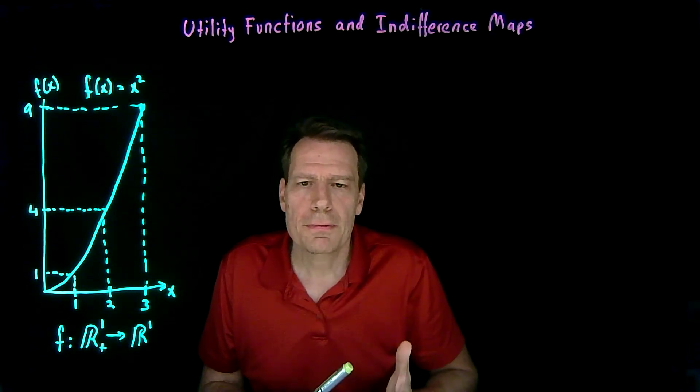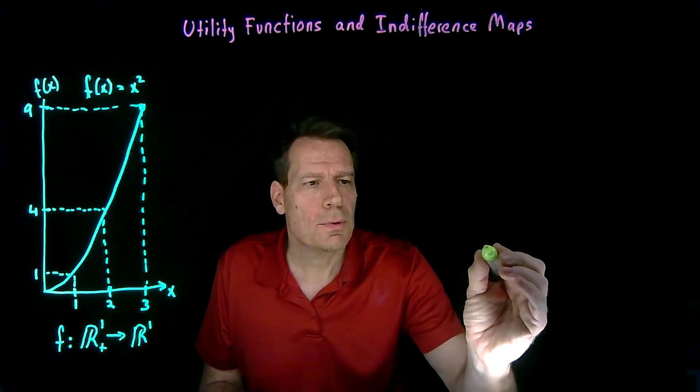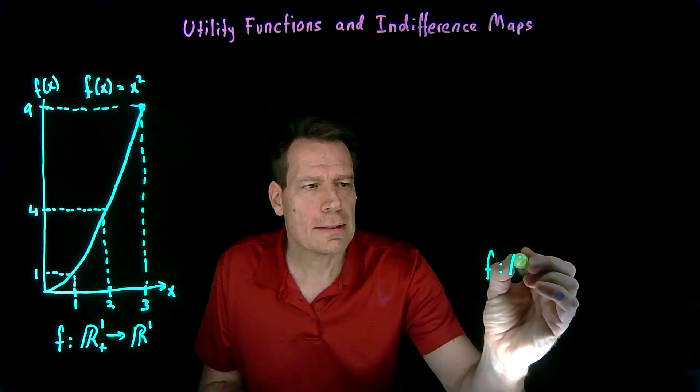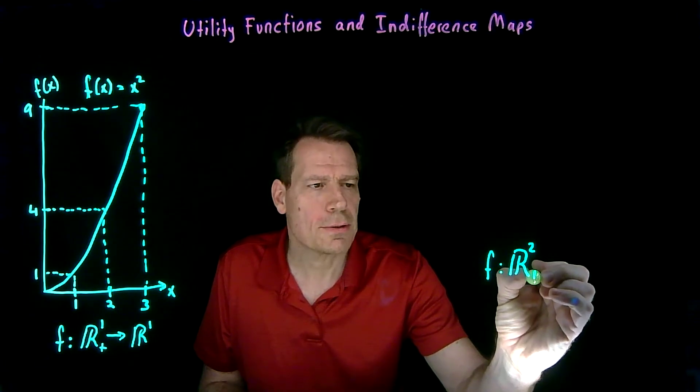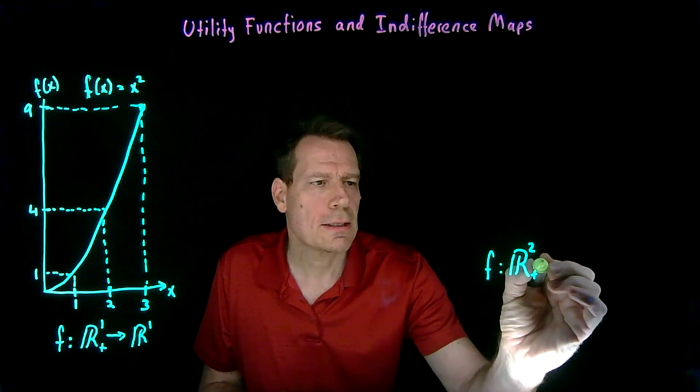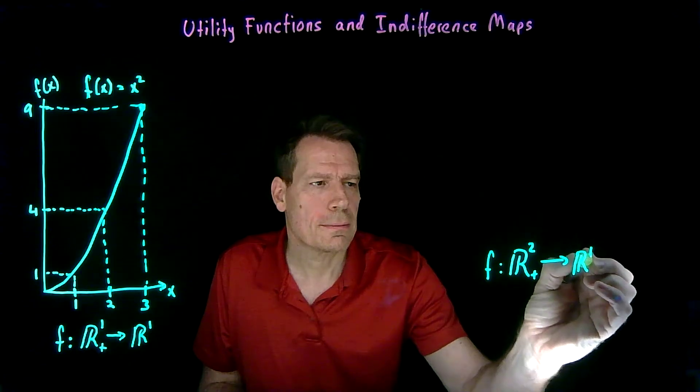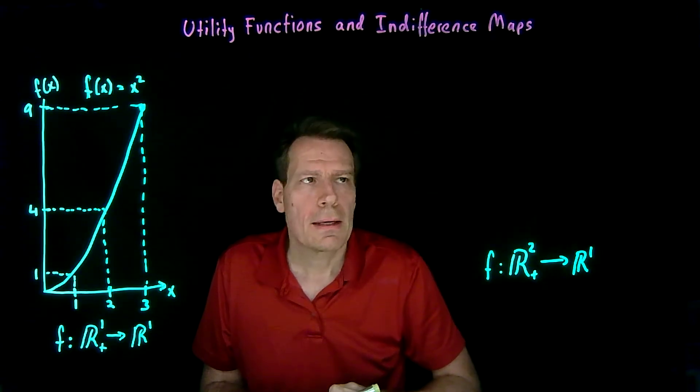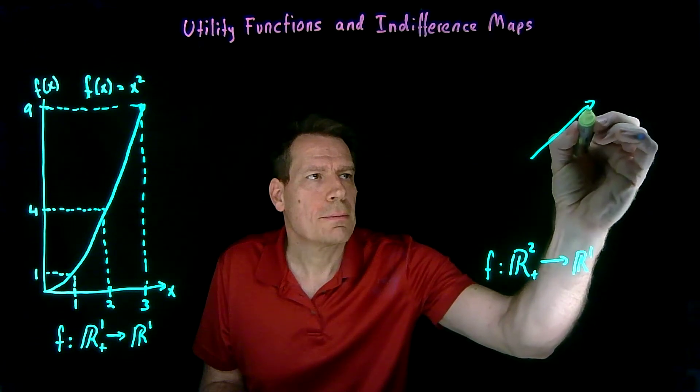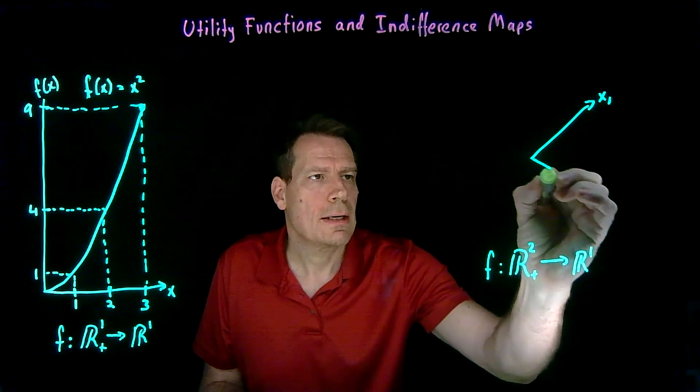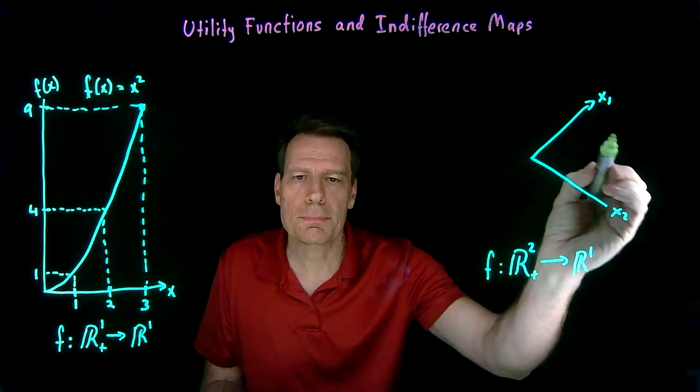But what if we have points that lie in two-dimensional space? Well then we would use a rule, a function, that assigns points in two-dimensional space, maybe in the positive part of that two-dimensional space, numbers that still lie on the real number line. Only now we have points that are more complicated, points that have an x1 dimension and an x2 dimension, points that lie in this plane.